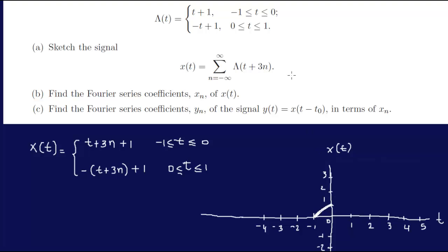That's for between minus 1 and 0. Now for t between 0 and 1, you have minus t plus 1, and you would have a negative slope going down. So that's your λ(t). Remember, we are trying to graph x(t), so we just need to shift it by minus 3.